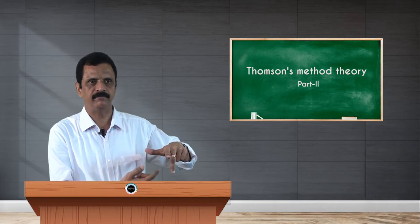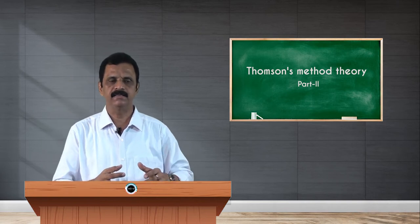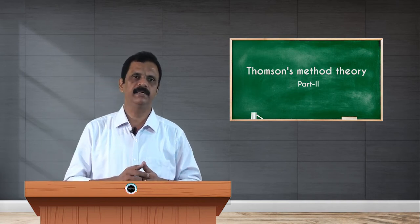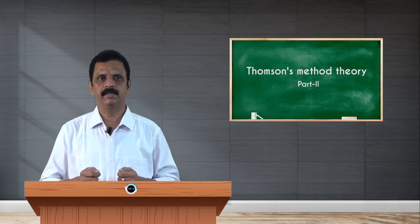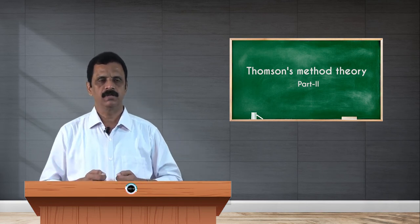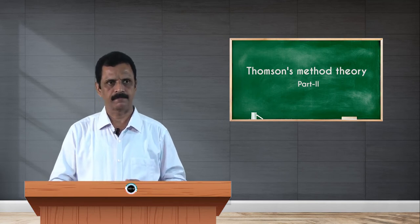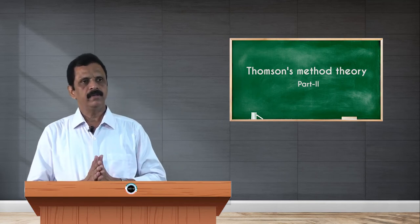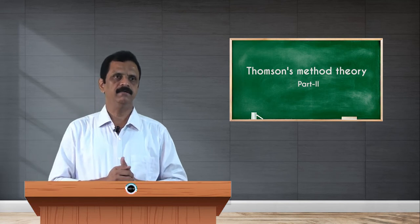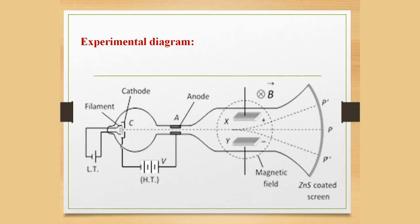Fleming's left hand rule is very important to understand the effect of magnetic force on a moving charge. Now, regarding the experimental arrangement made by J.J. Thomson to determine E by m of the electrons: he made use of a gas discharge tube, also known as a cathode ray tube or CRT.